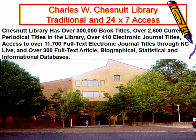Charles Chestnut Library has over 300,000 book titles, 2,600 current periodical titles, over 410 electronic journal titles, and access to over 11,700 full-text electronic journal titles through NC Live, as well as over 300 full-text article, biographical, statistical, and information databases.